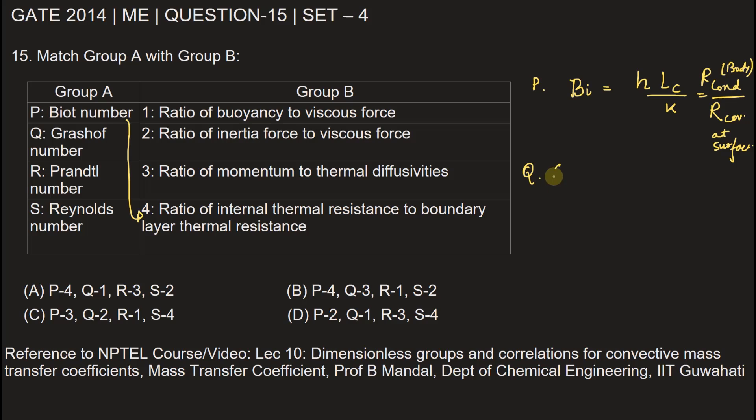Grashof number. Grashof number indicates the relative strength of buoyancy to viscous force. It is given by G times beta times (Ts - T∞) times Lc whole cube divided by kinematic viscosity squared. It is used in free convection. We can match Q with option 1, the ratio of buoyancy to viscous force.